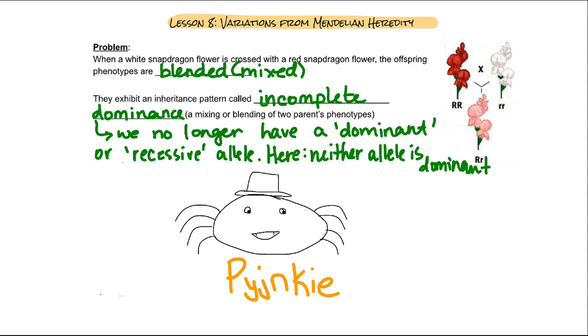So, we're looking here at what's called incomplete dominance. A blend of colors, a blend of traits of the parental generation leads to what's called incomplete dominance. We no longer have what's known as a dominant or recessive allele. Neither allele is dominant, neither allele is recessive. They mix,